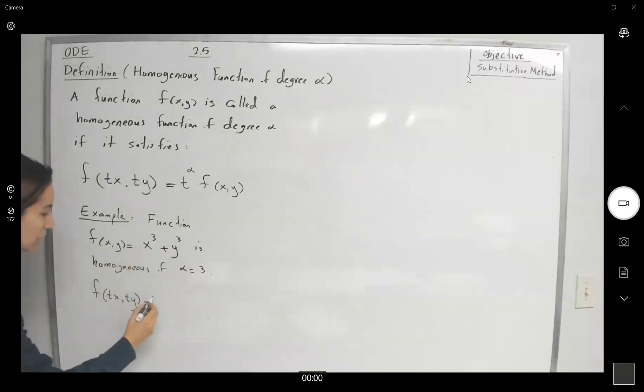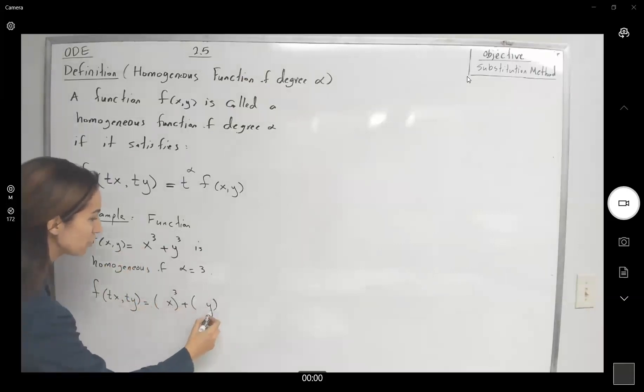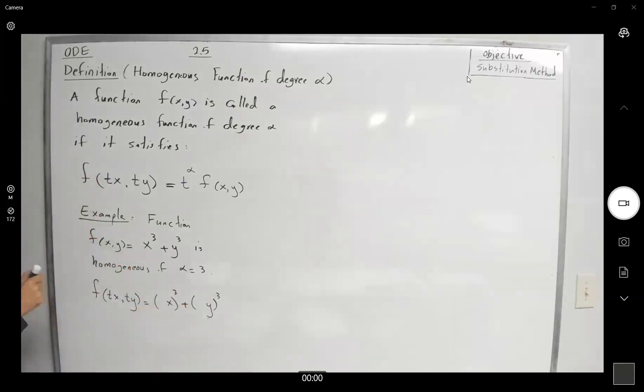so here we get tx to the third power, ty to the third power, and of course, going back to algebra, we can separate these terms and write it as t to the third x cubed plus t to the third power, and then obviously you can factor out t to the third power.